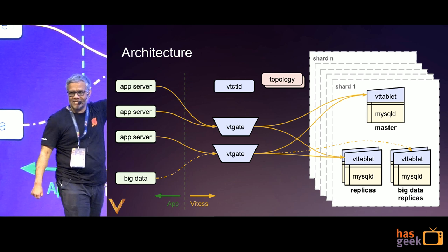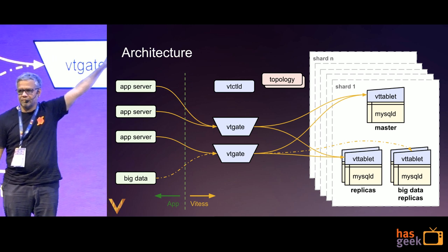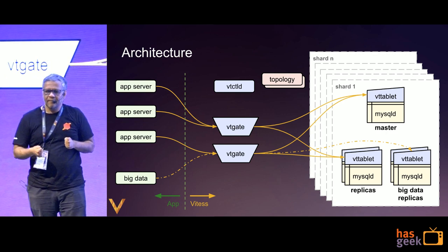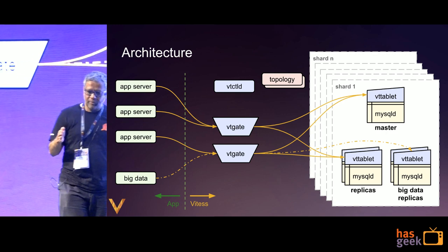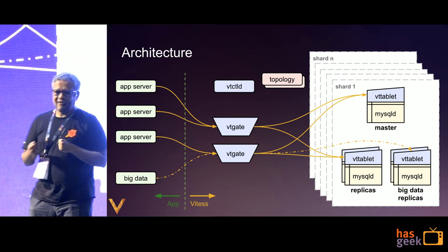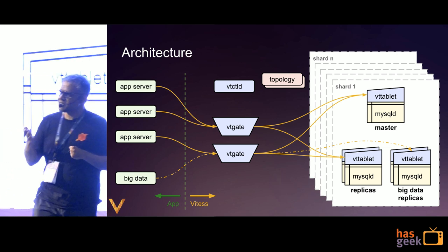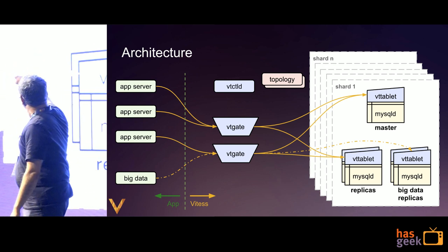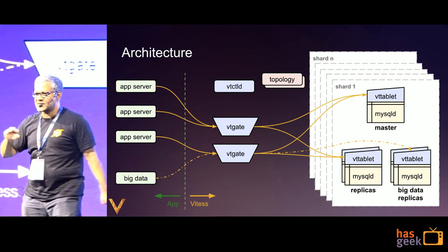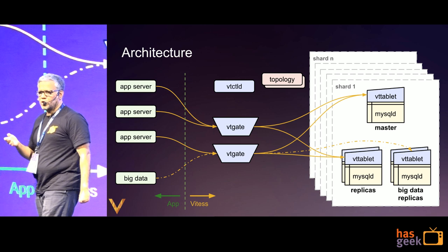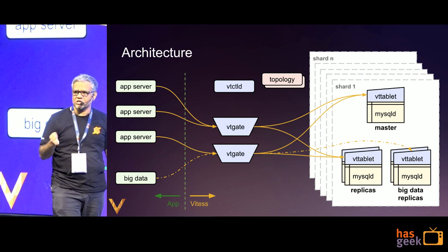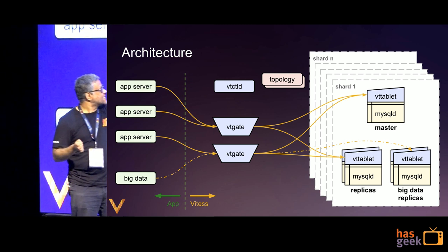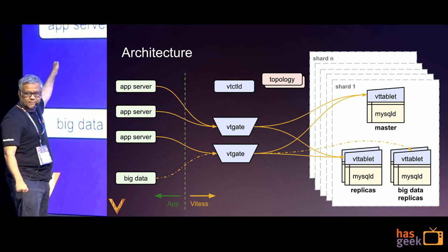VtGate does not send the query directly to MySQLD — it talks to VtTablet using gRPC. VtTablet also has a full parser built into it. Why do we parse the query again there? Because we need to determine whether this query is toxic or not. If we think the query is going to return millions of rows, we actually put limit clauses on it — we rewrite the query and then send it to MySQLD. VtTablet and MySQLD typically run on the same machine and talk over a Unix domain socket, so that communication is quite fast. VtTablet sends the query to MySQLD, gets the results back, sends them to VtGate, which sends them to the app server.